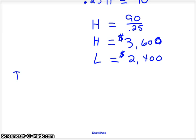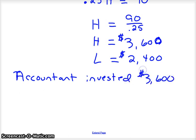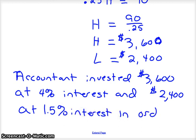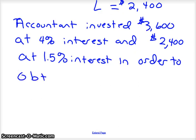So your accountant invested $3,600 at 4% interest and $2,400 at 1.5% interest in order to obtain earnings of $180 in simple interest.